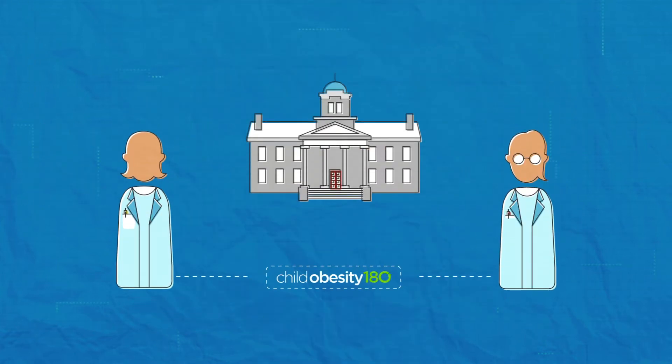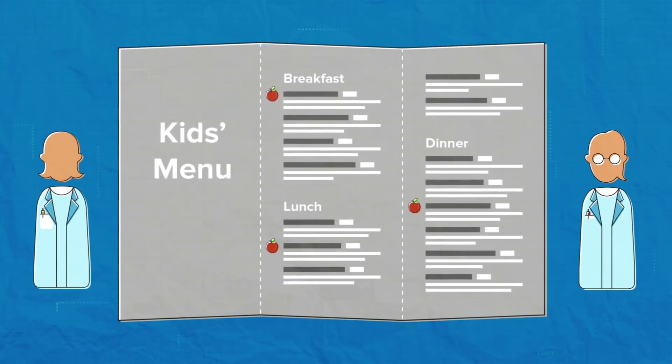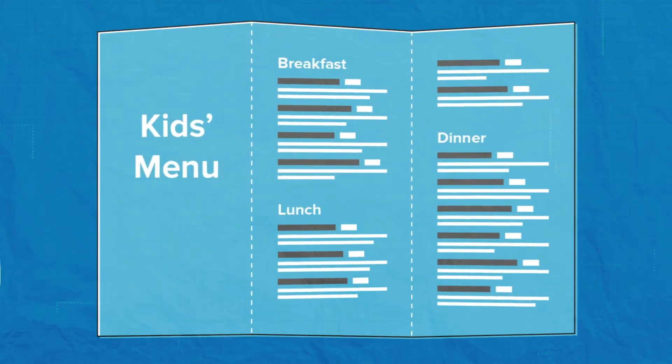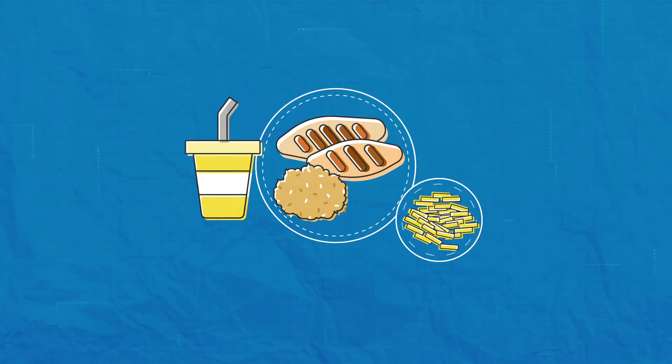Researchers with Child Obesity 180 at Tufts University studied changes made to the kids' menu at a regional restaurant chain. The new menu offered more healthy entrees, and all entrees came with healthy side dishes, like strawberries and salad by default.